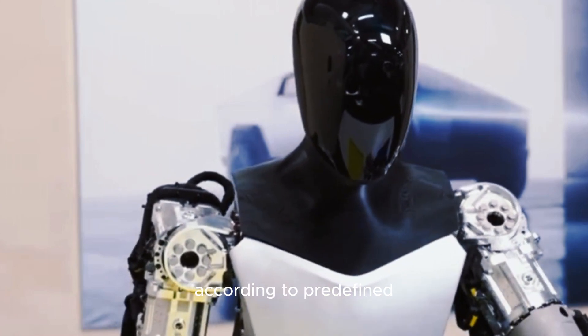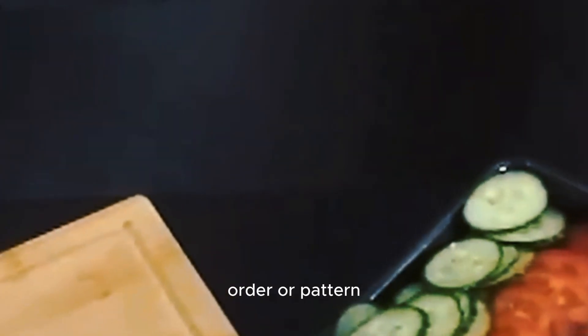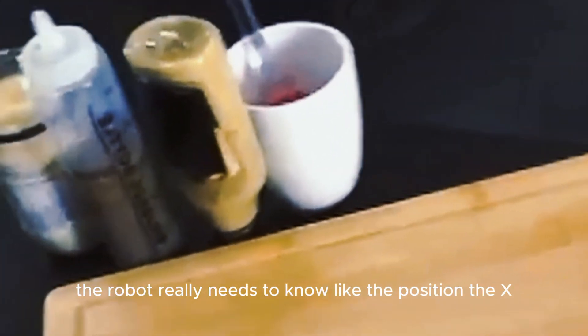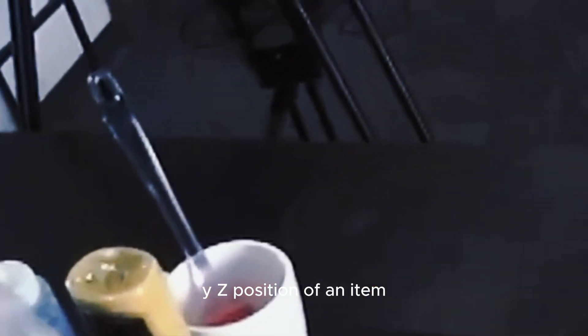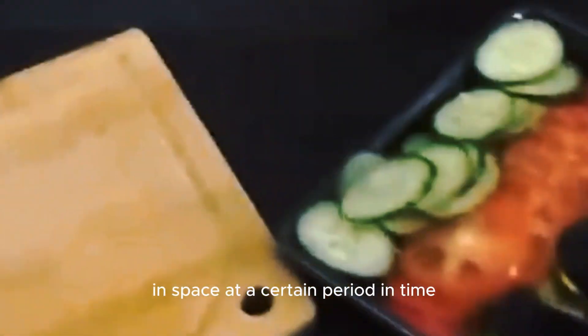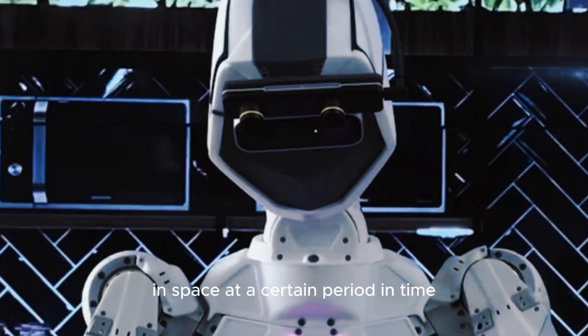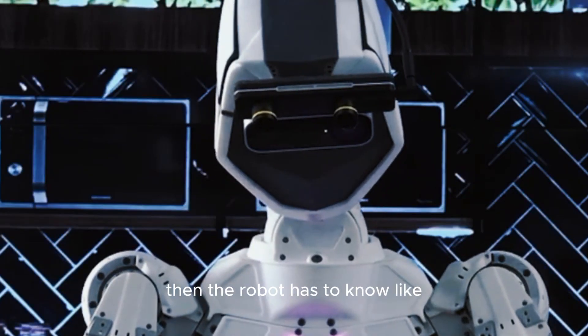So in this case, the robot really needs to know the position, the XYZ position of an item in space at a certain period in time. So when it's still its position, then the robot has to know which force am I supposed to use to grip this item.